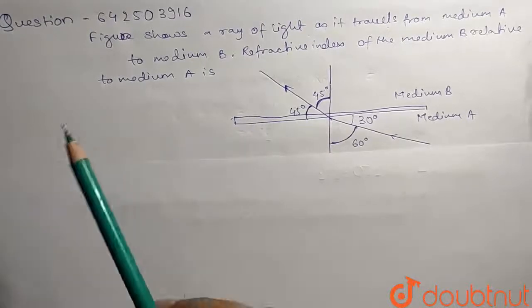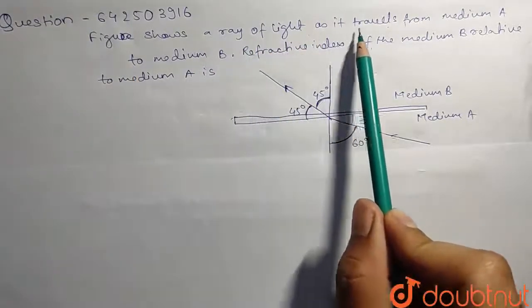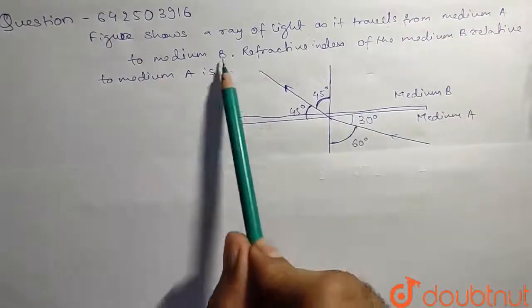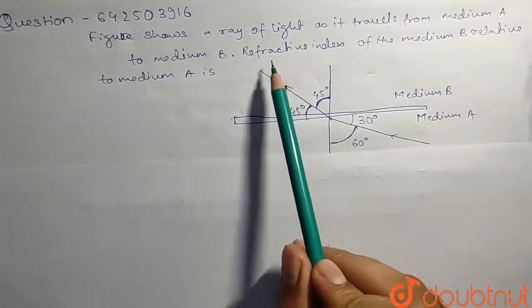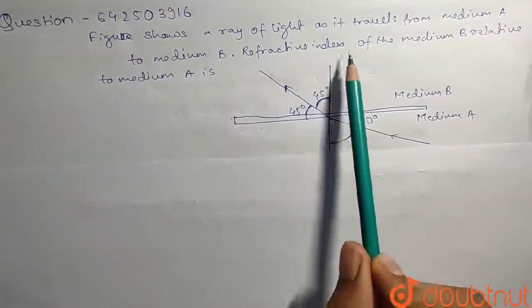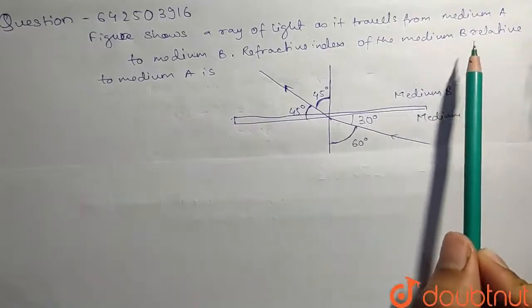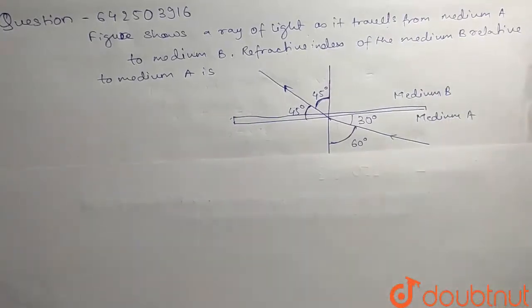The question here given is: figure shows a ray of light as it travels from medium A to B. The refractive index of medium B is relative to medium A, so what we have to find.